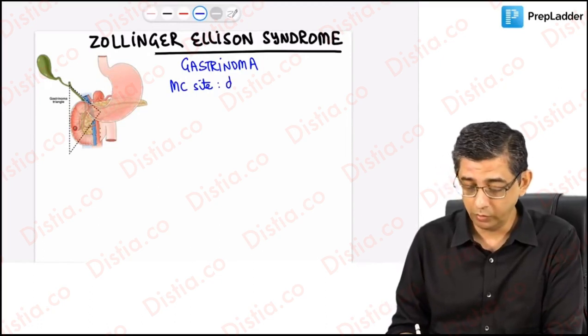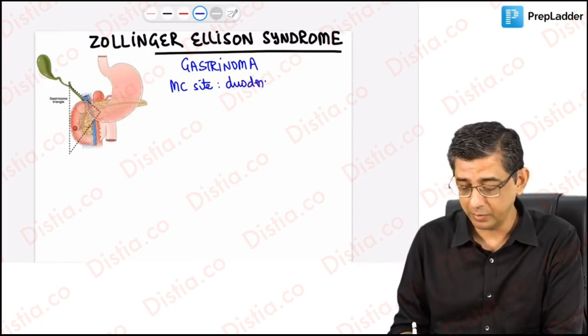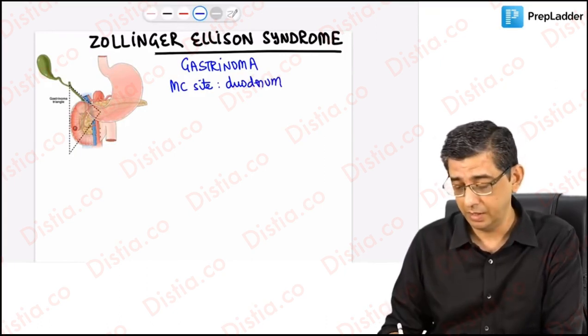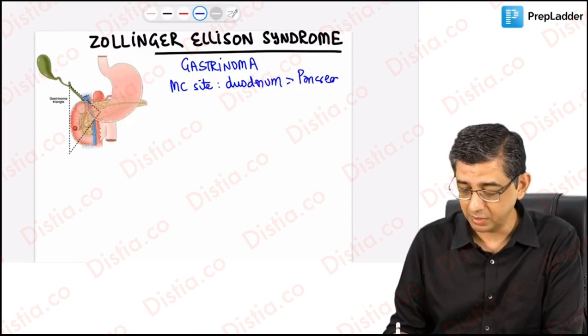I repeat the statement once again: the overall commonest site of this tumor happens to be the duodenum, but the most common site of G cells is the stomach. It is duodenum followed by pancreas followed by stomach in that order.